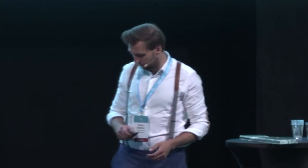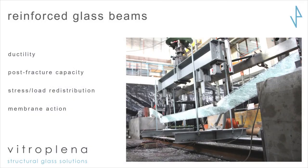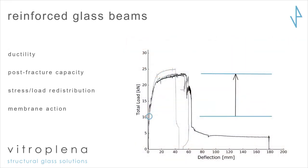Basically what you see on this picture is a beam tested in membrane action. But before we get there, let me show how a multi-span beam really behaves. Where you see the round circle, you have glass fracture, and all the rest after that phase is the post-fracture phase where safety is important. Here you can see that we have ductility and we can make it very significant, and we can have a very high post-fracture load.